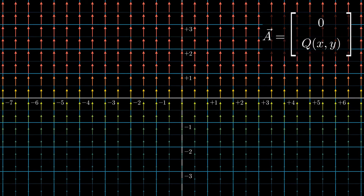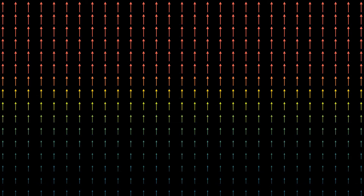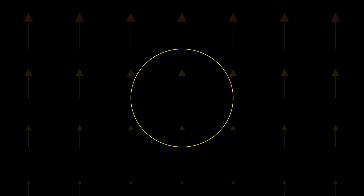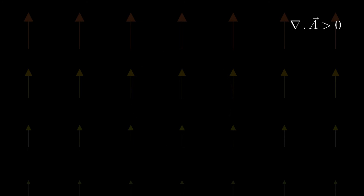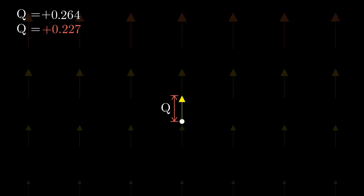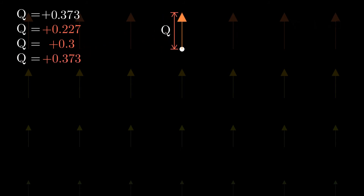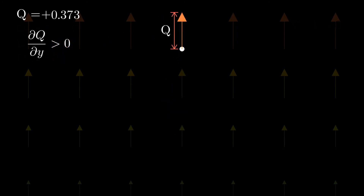Similarly, consider a vector field which contains only the y component, meaning there is no lateral flow. We apply the same logic here — looking at the density, we conclude that the divergence is positive. When we look at q values as we take tiny steps along the y direction, they increase, corresponding to a positive partial derivative of q with respect to y.